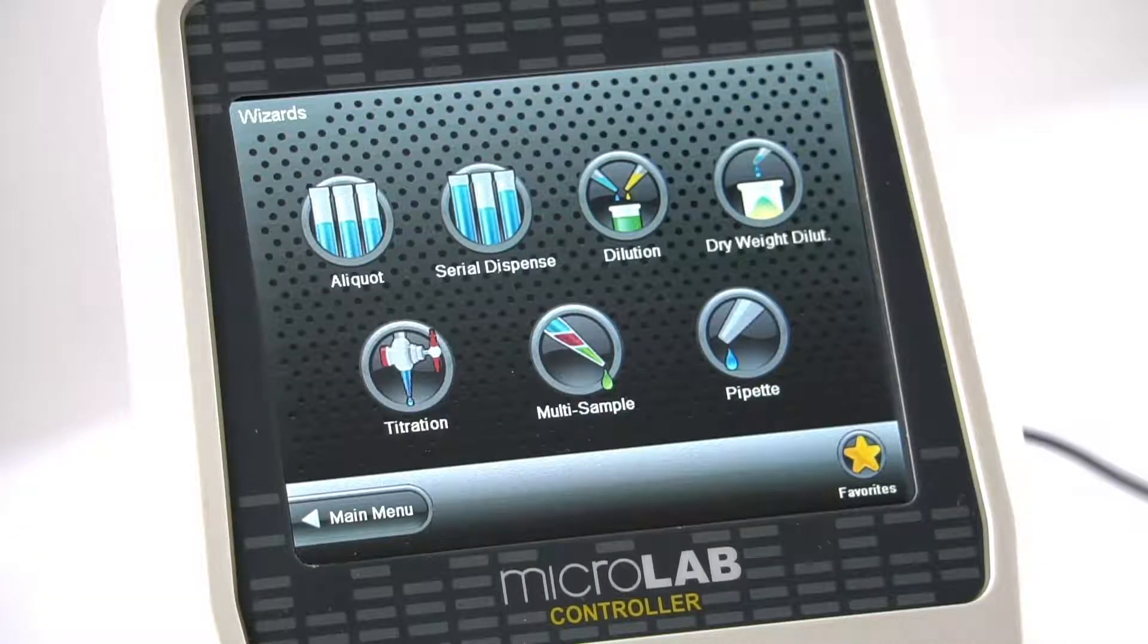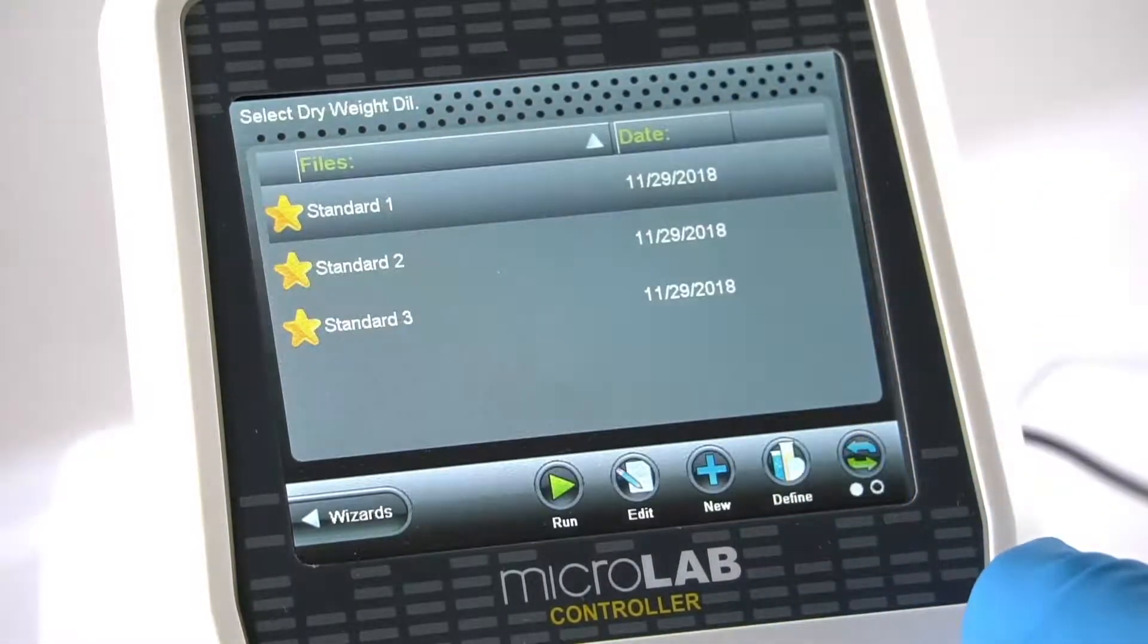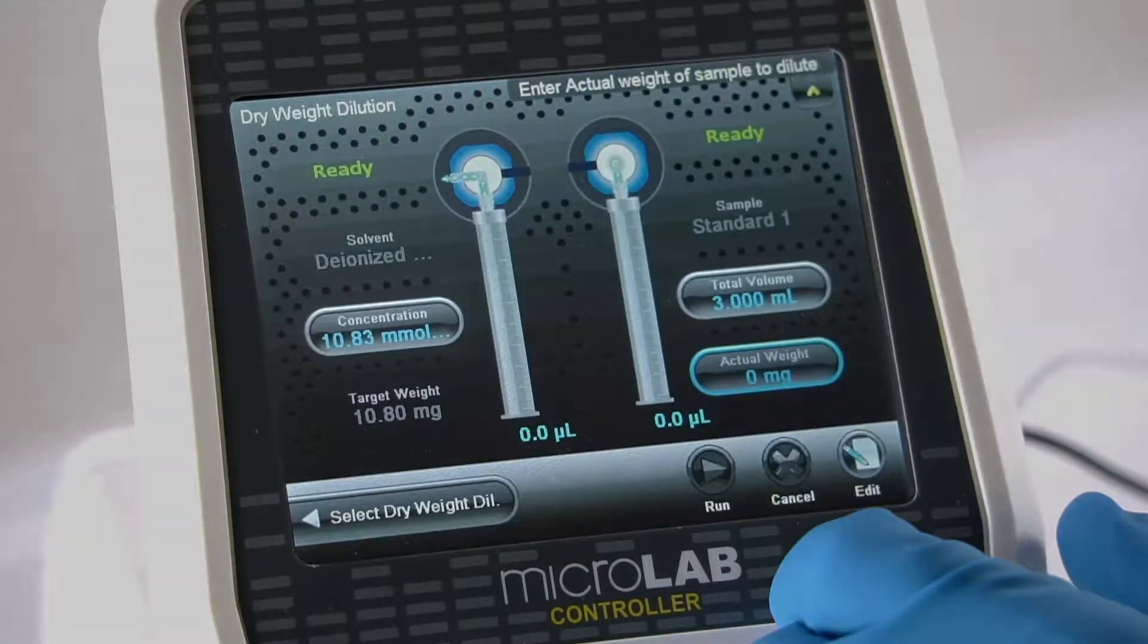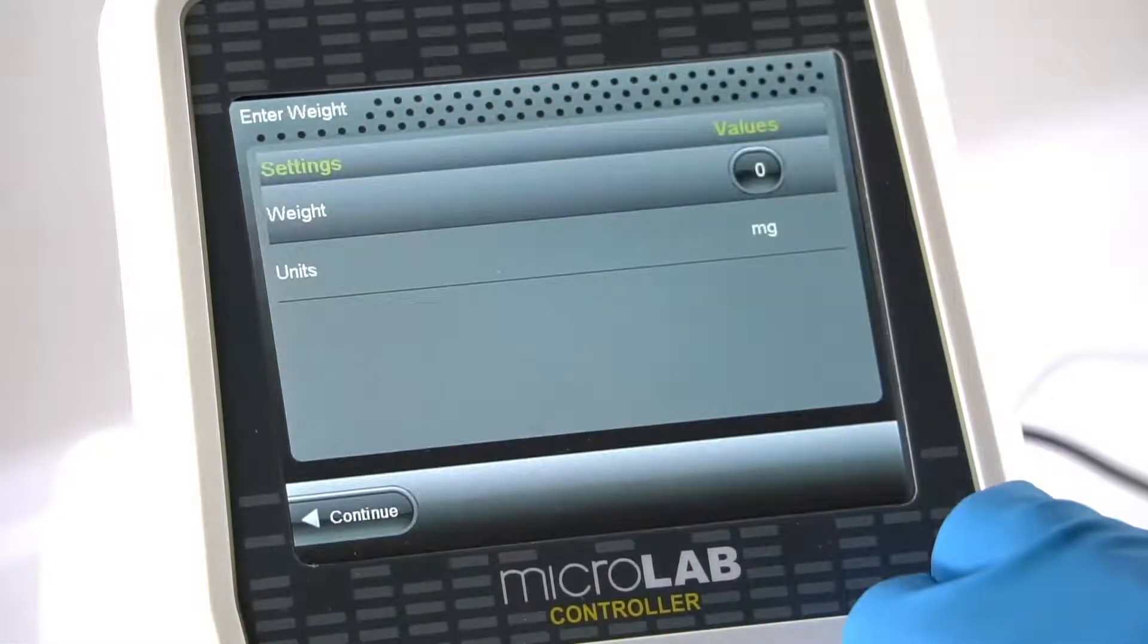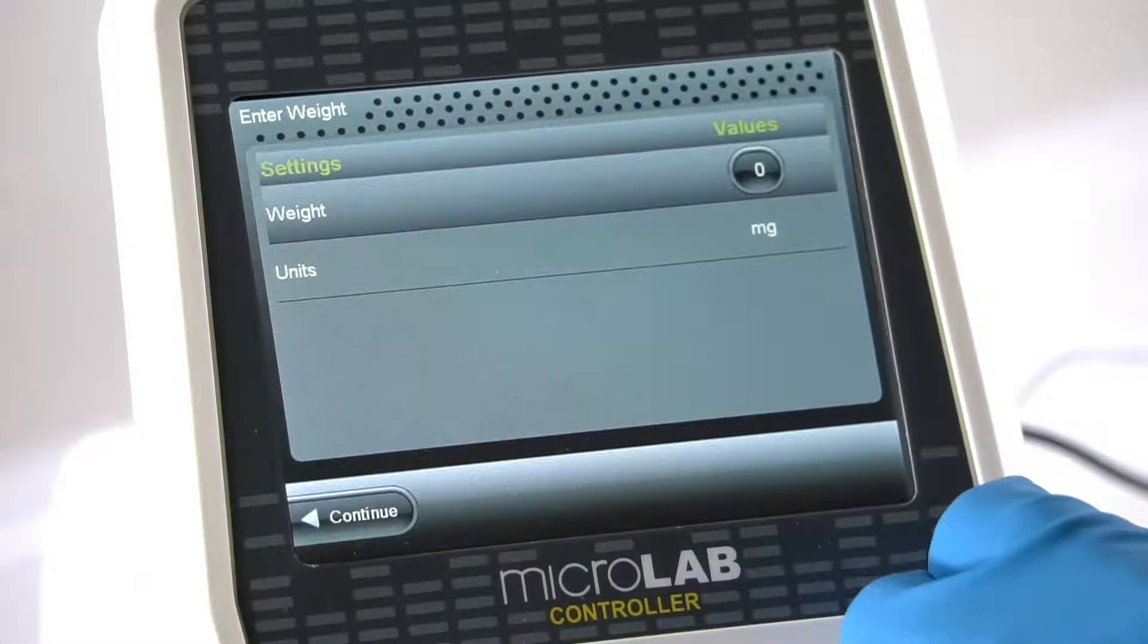a technician touches the dry weight wizard and selects the relevant standard from a list of user configured options. Given a desired concentration and final volume, the Microlab calculates the target weight needed to achieve an exact final concentration.